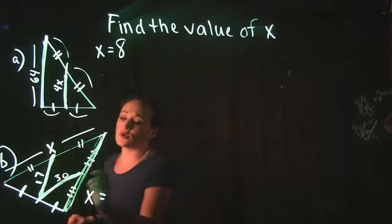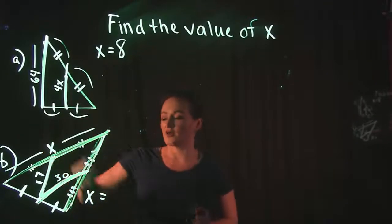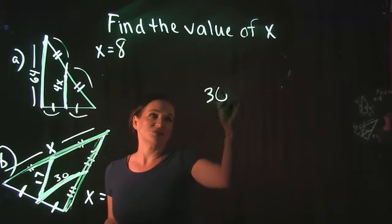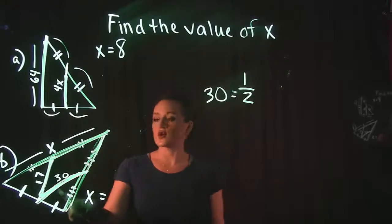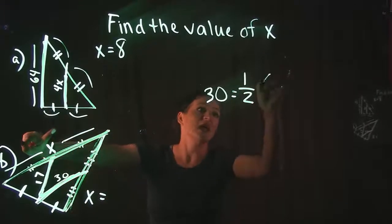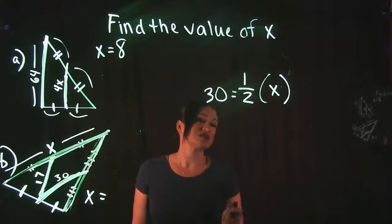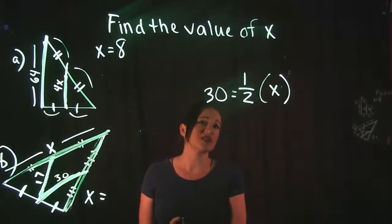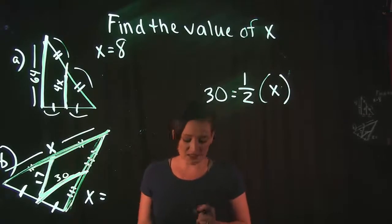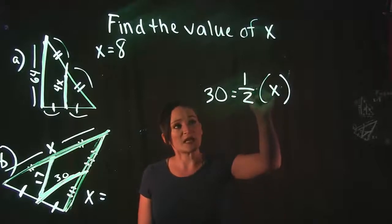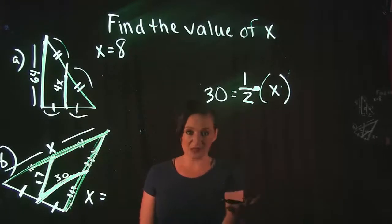So we're going to use 30 and the side labeled X. The midsegment 30 is half of its corresponding base, so on the left side of the equation put the midsegment: 30 = (1/2)x. That is our equation to solve. To solve for x, we need to get rid of the one half. There's a rule in algebra: if you are multiplying by a fraction as a coefficient, instead of dividing — which creates extra steps — we use the reciprocal.